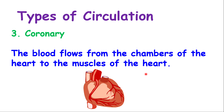The third type is coronary circulation, where blood flows from the chambers of the heart to the muscles of the heart. This is important because the heart muscles contain cells and tissues — the heart is a working organ that requires oxygen and glucose for respiration to have enough energy. Without blood going to the muscles of the heart, it would be deprived of oxygen and glucose and unable to function properly.